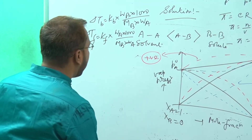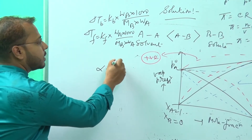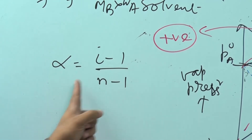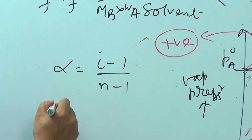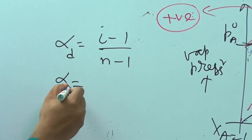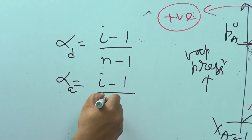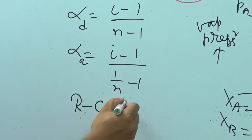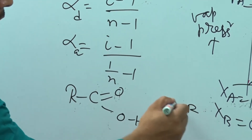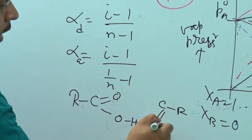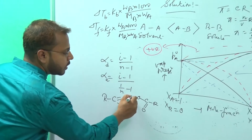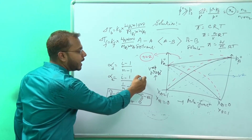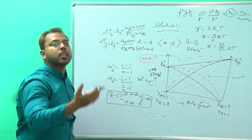For ionic solutes, we need to consider the Van't Hoff factor i, related to degree of dissociation alpha: alpha = (i − 1) / (n − 1) for ionic dissociation. In case of association — for example, RCOOH molecules linked by hydrogen bonding — the formula is alpha = (i − 1) / (1/n − 1). When NaCl dissociates, the dissociation formula is used; when molecules associate, the association formula is used.